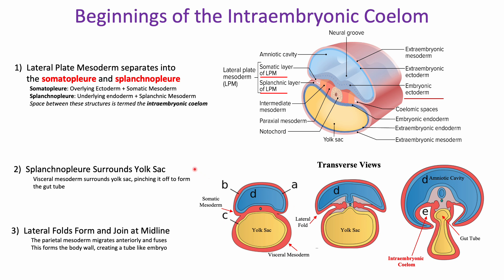So the big process here: the lateral plate mesoderm separates into the somatopleure — which is superior, having ectoderm and somatic mesoderm layers — and then the splanchnopleure, which has the endoderm and splanchnic mesoderm. The lateral folds start to come around and eventually fuse at the midline, forming the intraembryonic coelom on either side of our gut tube, running as two columns through the developing embryo.